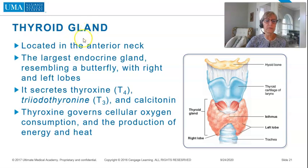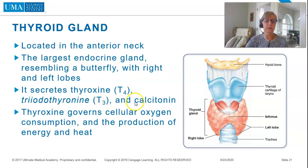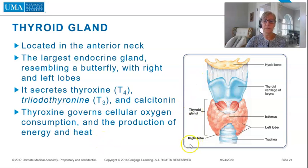The thyroid gland is located in the anterior neck and is the largest endocrine gland, resembling a butterfly with right and left lobes. It secretes T4, T3, and calcitonin. Thyroxin governs cellular oxygen consumption and the production of energy and heat. You can see in the graphic how it does resemble a butterfly.